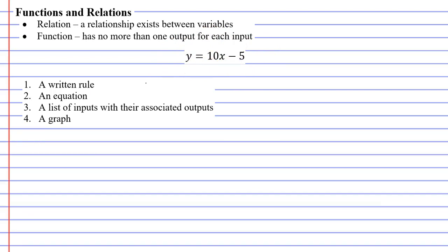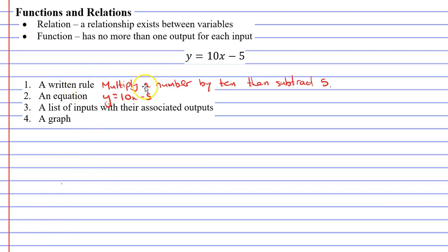Relations can be represented in many forms — they are not just represented as an equation. I've listed about four different forms below, one of which we've used already, which is the equation y equals 10x minus 5. How would this relation look if it was represented as a written rule? We're taking a variable x, multiplying it by 10, and then subtracting 5. My written rule would simply say: multiply a number by 10, then subtract 5.